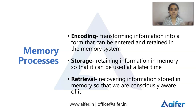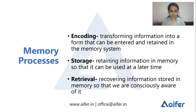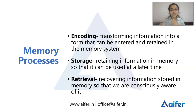Encoding: our senses take in a lot of information from the environment. We are transforming information from the environment into a form that can be entered and retained in the memory system. In our eyes there are light waves, and there are sound waves. We transform this using chemical or electrical signals. That is called encoding.